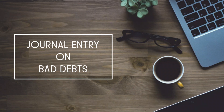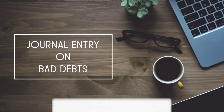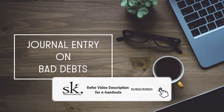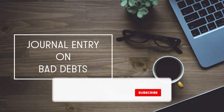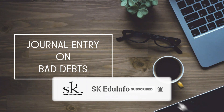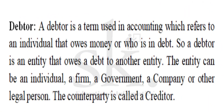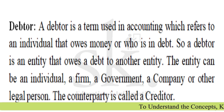Welcome to the video lecture on introduction to accounting. Our topic today is about bad debts and journal entries relating to bad debts. We have already discussed debtors and bad debts in our previous video. Debtors are all those entities — individuals or organizations — who are supposed to pay you a certain sum of money. Since you are going to receive money, debtors are part of a current asset and always considered to have a debit balance.